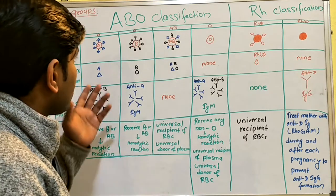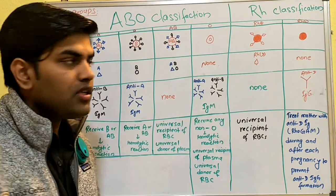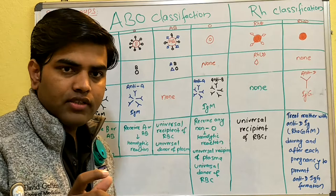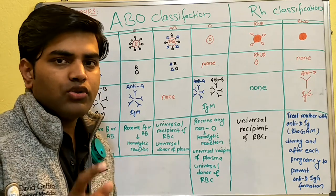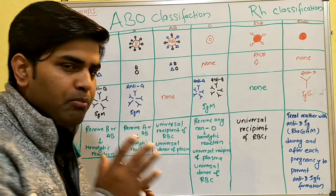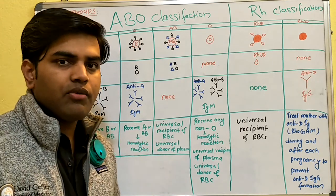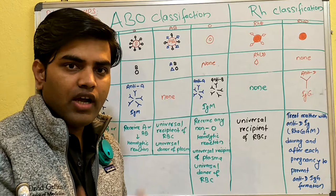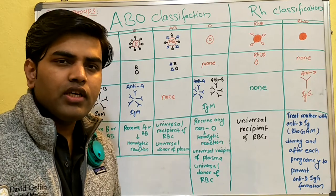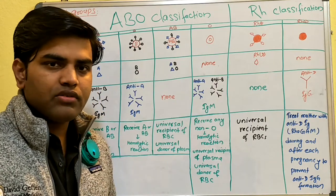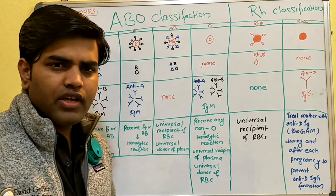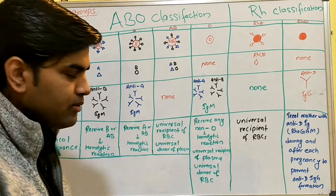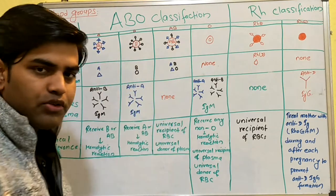Today we will be discussing the blood groups — the ABO classification and Rh classification. We'll also talk about hemolytic disease of the newborn and ABO incompatibility. This is a very basic and very important topic for dealing with blood transfusion. As a medical doctor, you need to have some idea about it.